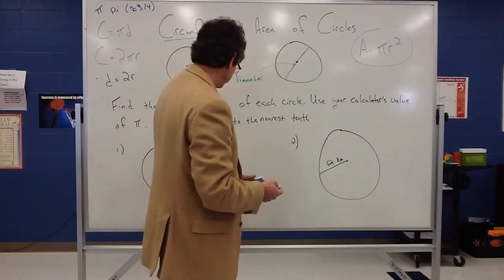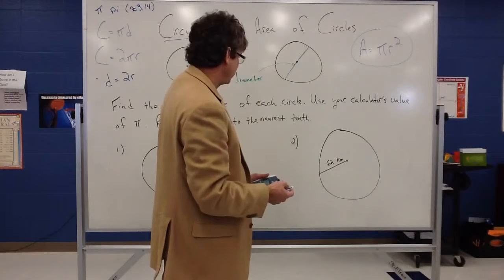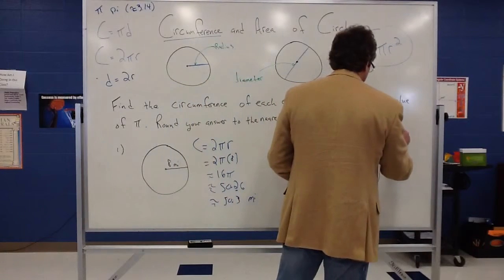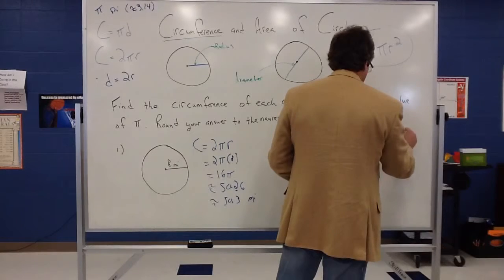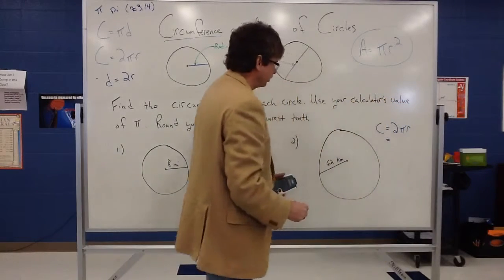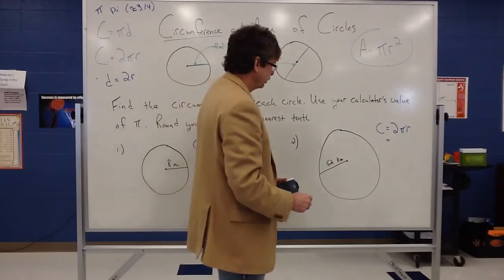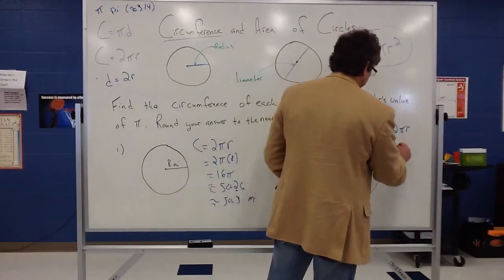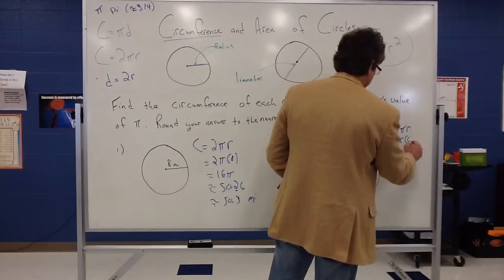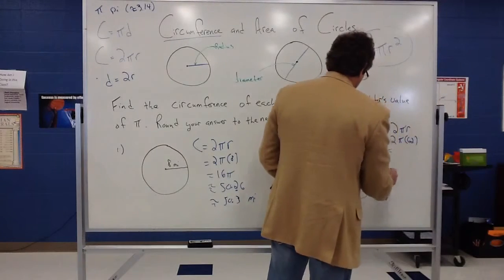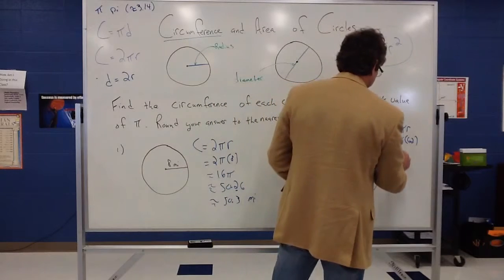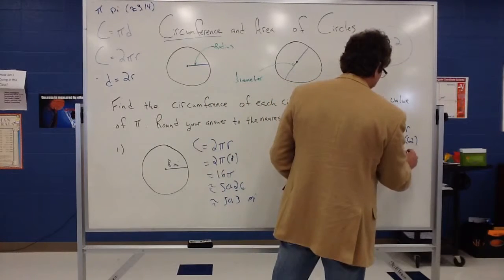So for this example, we have, again, the radius. So we can say the circumference is equal to 2 pi r. So we can then substitute 62 in for the radius. So 2 times pi times then 62. And I can multiply 2 times 62 pretty easily. That would be, what, 124? 124 pi.